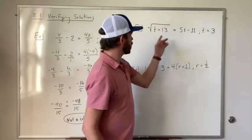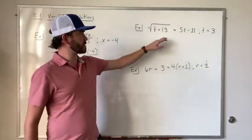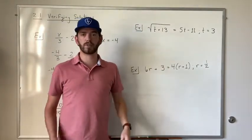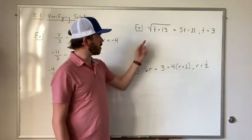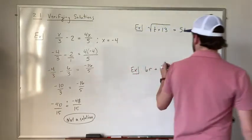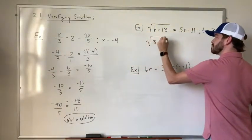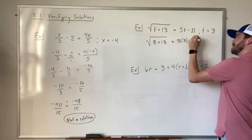Now let's go and work on our next problem. We have the square root of t plus 13 is equal to 5t minus 11. And we're given a solution of t equals 3. So once again we're just going to plug in 3 for all of our variables and simplify both sides. So we've got the square root of 3 plus 13 is equal to 5 times 3 minus 11.